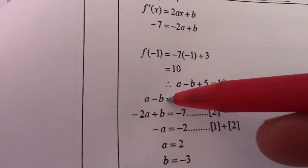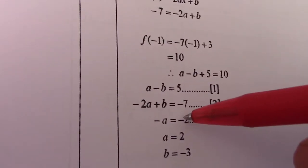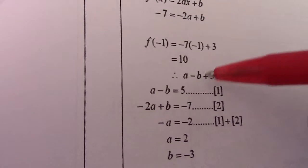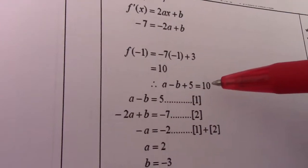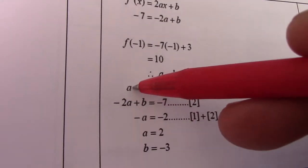And if I put it back there, from a - b + 5 = 10, we get a - b = 5. Now, 2 goes in there for a.